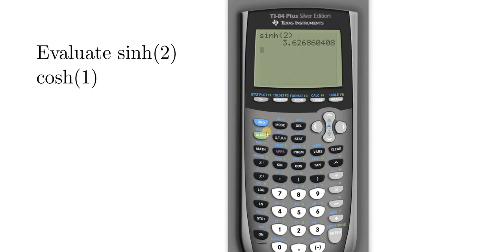Let's do cosh 1. Again you hit second, zero. And you're looking for cosh. You could just start scrolling down or you can hit the letter C.